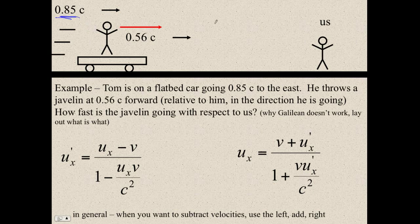Well, you know it's going to be faster. We're going to see that ball going faster than the cart is going. The cart is going 0.85c. But it can't be 0.85 plus 0.56 because that's 1.41 the speed of light. That's more than the speed of light, and it can't be that. So that's what these clever formulas are for.